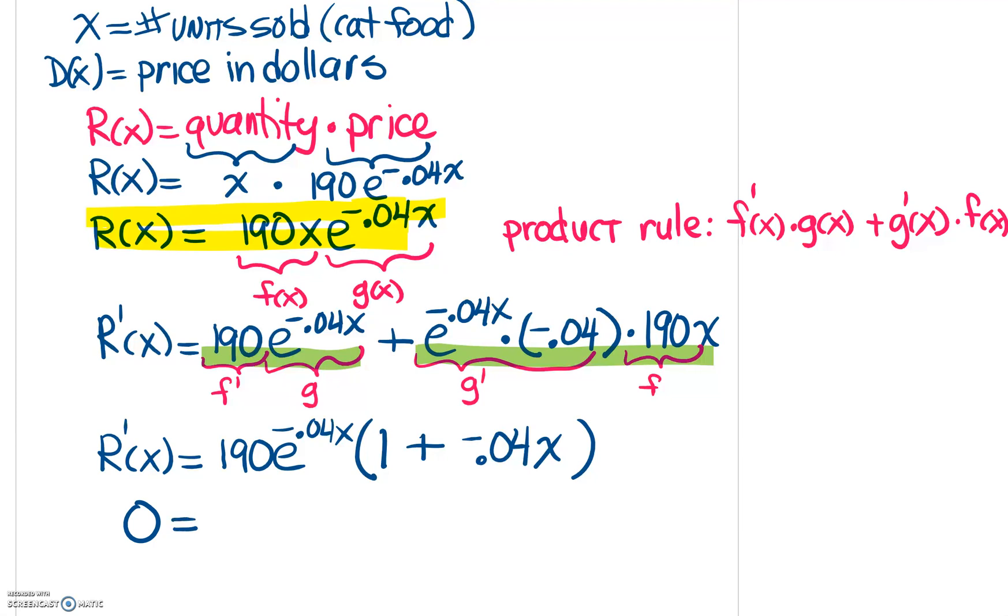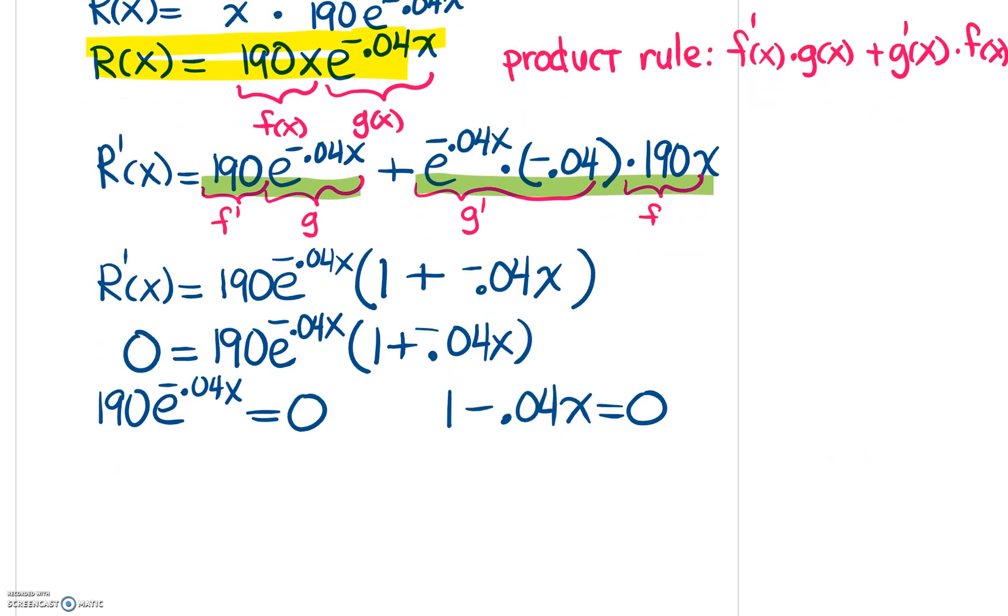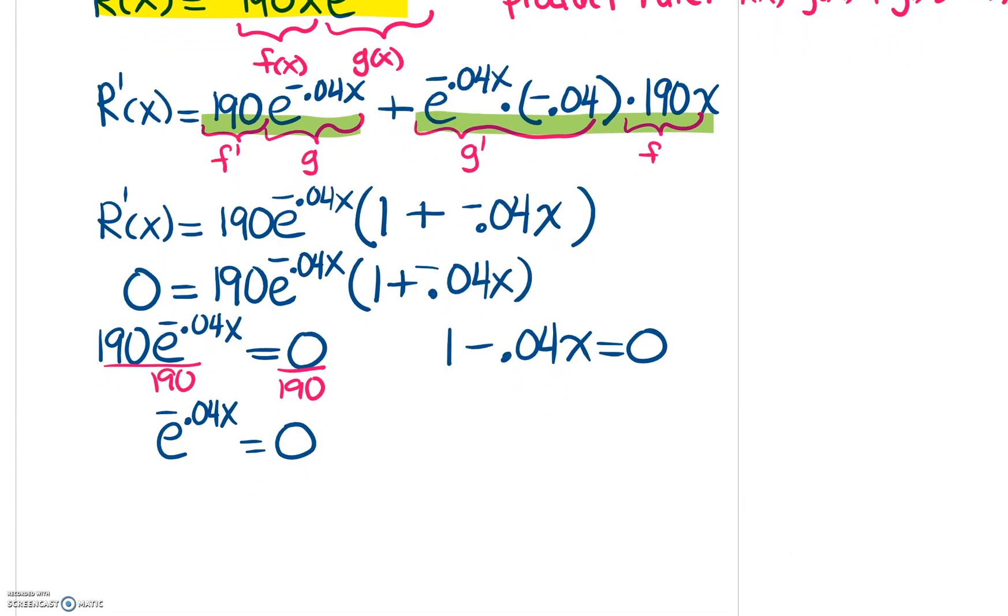So then I'm going to set this equal to zero to find the critical points because critical points are always where the derivative is equal to zero or where the derivative is undefined. In this case, I don't see any place where our derivative is undefined. So I have it factored. So I'm going to set each factor equal to zero and solve for the X. Now here on this first term, when we solve for X, if I divide by 190 on both sides, then I'm going to get this E to the negative 0.04 X equals zero. And that's just not possible. You can't have E to an exponent equaling zero.